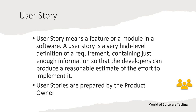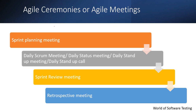To summarize the artifacts: the product backlog contains all requirements or expectations received from the stakeholder and is prepared by the product owner. The sprint backlog is created during sprint planning, containing what, why, and how to develop for the upcoming sprint. The user story is a feature or module in the software. Now let's move on to the agile ceremonies, also called agile meetings or agile events.